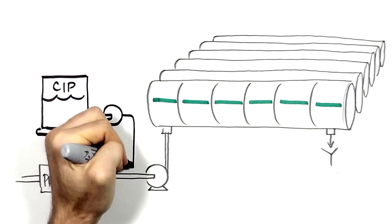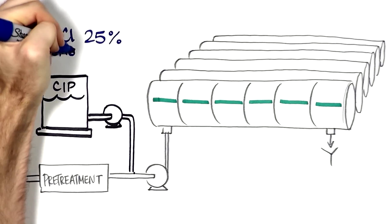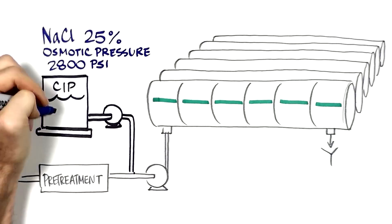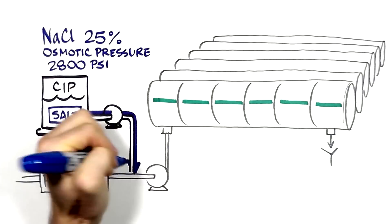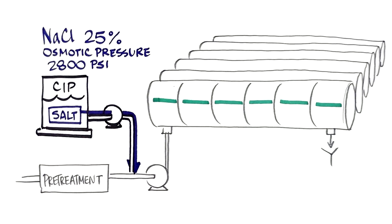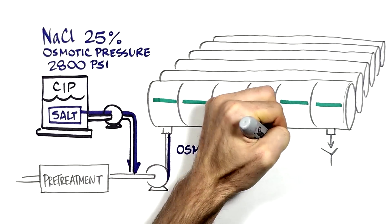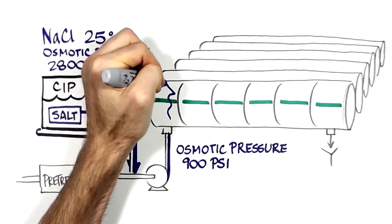In our CIP tank, we have 25% concentration table salt. It has an osmotic pressure of 2800 psi. We can inject a few gallons of this concentrated table salt solution into the feed water stream that flows to the feed pump. This mix of two liquids has also high osmotic pressure, 900 psi. Let's call it saline water slug, or slug.